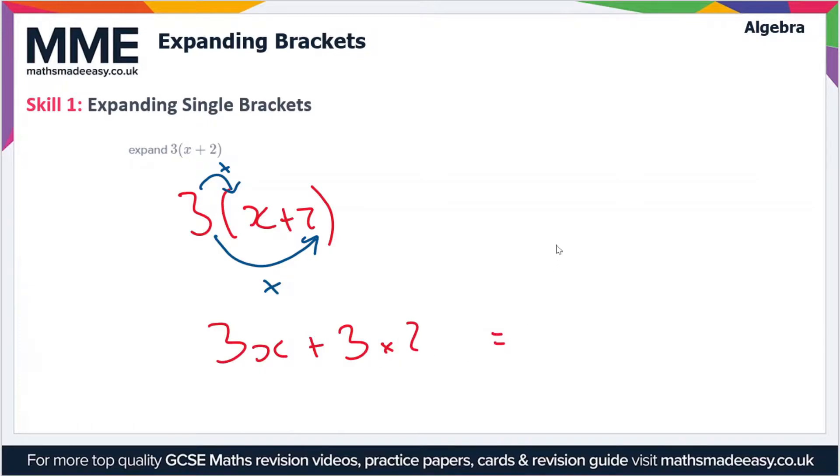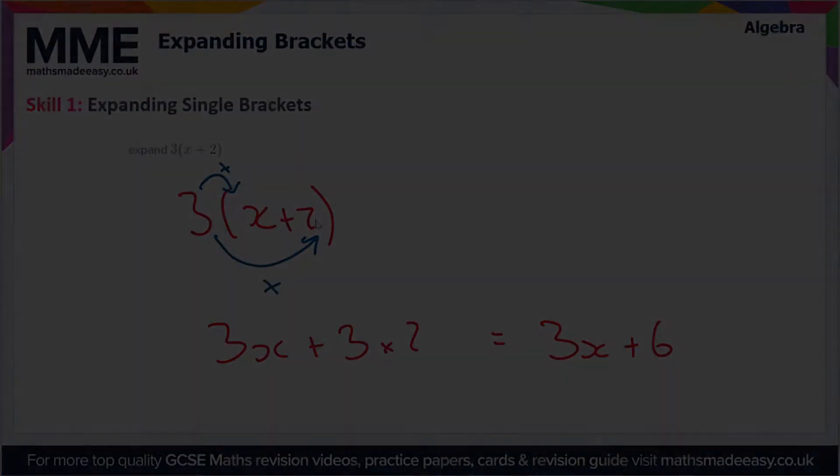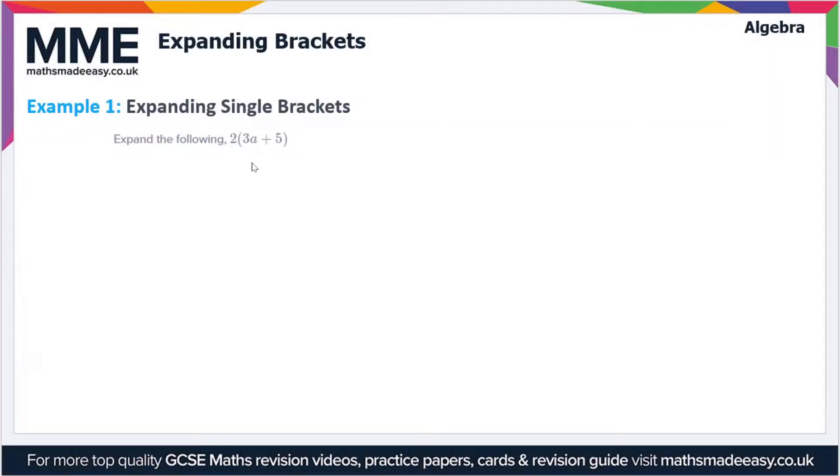Multiplying in each case gives us 3x plus 3 times 2, so we're left with 3x+6. This is the process for expanding brackets - you just multiply the number outside the brackets by each of the terms inside the brackets. Let's take a quick look at some examples.